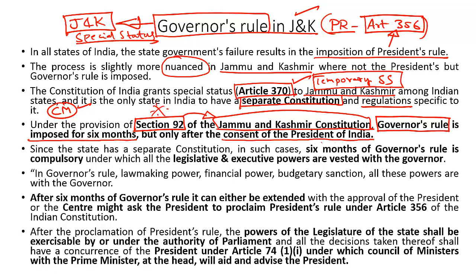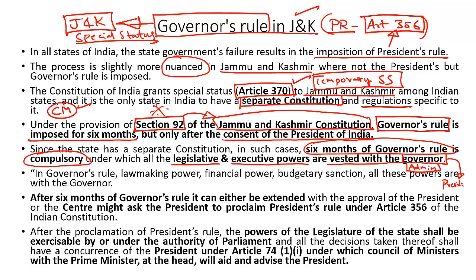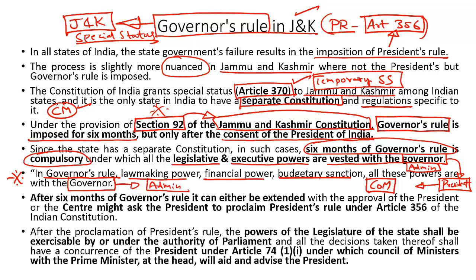According to Section 92, six months of Governor's Rule is compulsory under the J&K Constitution, and during Governor's Rule all the legislative and executive powers of the state are vested with the Governor. The Governor is assisted by a few administrators in executing responsibilities, but is ultimately answerable to the President of India, who is bound by the aid and advice of the Union Council of Ministers. When Governor's Rule is in place, legislative, financial, and budgetary powers are all vested with the Governor.